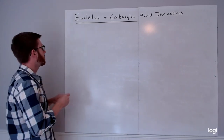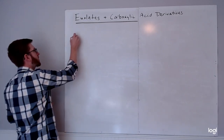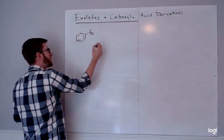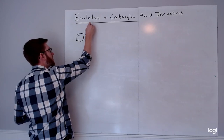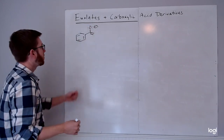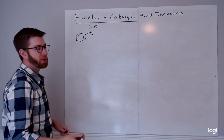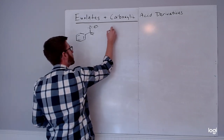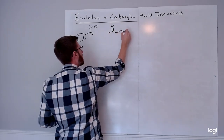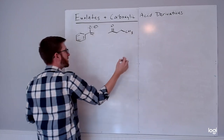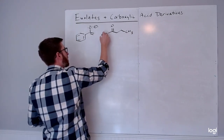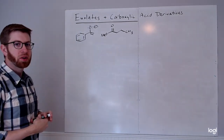To get started, we can look at a generic reaction. We'll go back to our enolate with the benzene ring, since we seem to use this a lot - it's easy to draw and only one possible enolate forms from the structure. And let's choose a methyl ester as the electrophilic species.